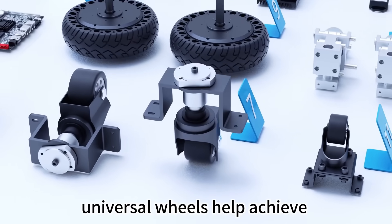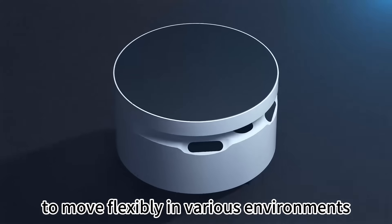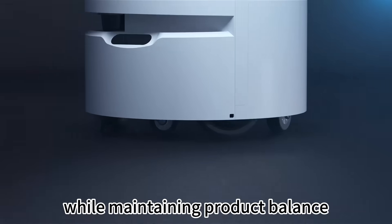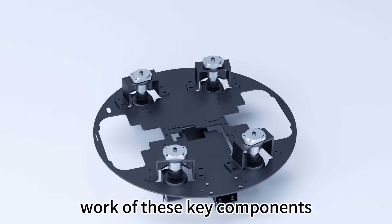Universal wheels help achieve multi-directional movement, allowing robots and automation equipment to move flexibly in various environments while maintaining product balance. Through the combination and collaborative work of these key components,